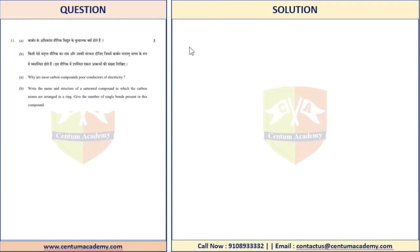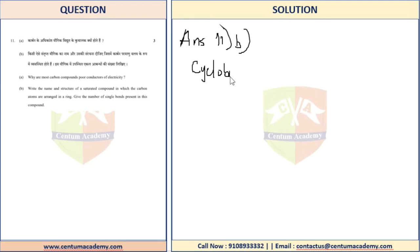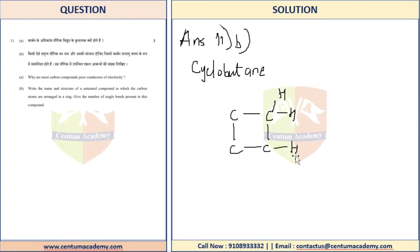You'd write 'Answer 11B.' For example, let's try with cyclobutane. Since it is butane, it would have four carbons arranged in a ring. Please do not forget to write the hydrogens — there will be hydrogens at each carbon end.